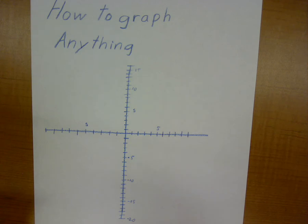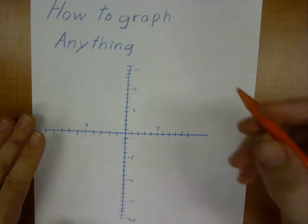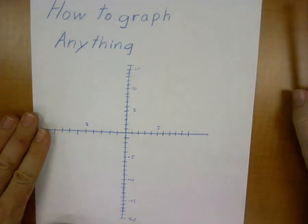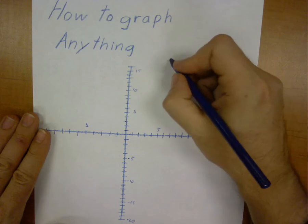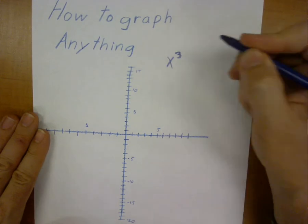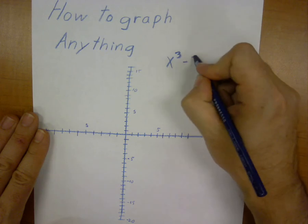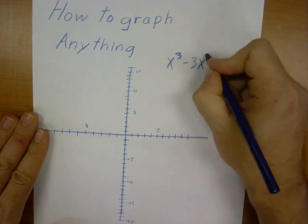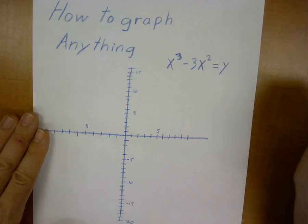I'm purposely going to take an equation that's a little harder than what we'd normally deal with just to make a point on how to graph something. We are going to graph the equation x cubed, that's x to the power of 3, minus 3x squared equals y.